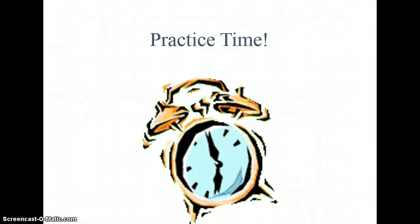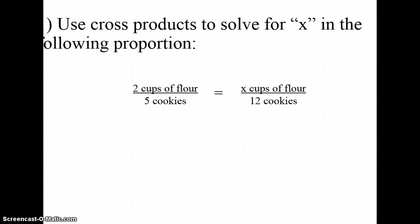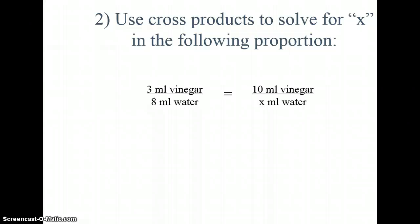Let's do some practice. We're going to use cross products to solve for x in the following proportion. So if I wanted to know if I need 2 cups of flour for 5 cookies, how many cups of flour would I need for 12 cookies? Now this one I can't do in my head because I don't know 5 times what equals 12. I could work it out, or I could use cross products.